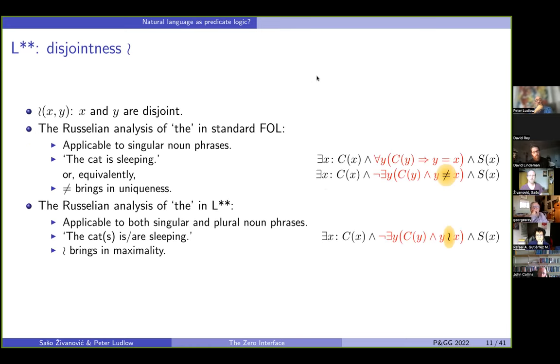Then to give you an example of where the disjointness is interesting. You're all familiar with the Russellian analysis of the. So here we've got the inequality, which brings in uniqueness, as you're totally aware of. Now we replaced this inequality with this disjointness and we will get maximality. And this way, the analysis of the will actually become useful, both for singular and for plural noun phrases. So the way I like to read this formula is, so we've got the, these axes, they're cats, and we don't have other cats. So there is no y, which would be cats, but disjointed from x, so no other cats.